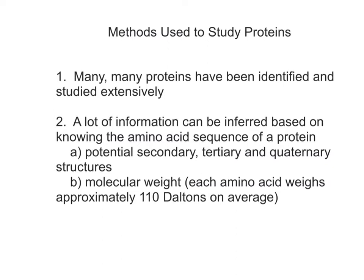As we've already talked about in class, from the amino acid sequence, we can use bioinformatics programs to look at secondary, tertiary, and quaternary structures using algorithms that people have made based on all of the proteins that we already know. Now one interesting thing is we can determine the molecular weight of every protein based on the chemical structure of that protein, because every atom has a particular molecular weight. Hydrogen's molecular weight is 1. Oxygen's molecular weight is 18. And so forth. So we can look at the amino acid sequence and actually calculate the weight of every protein.